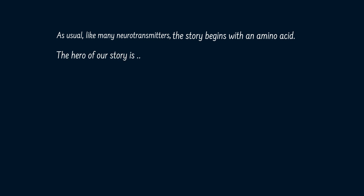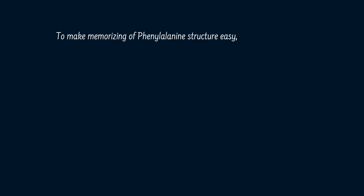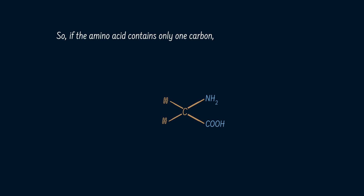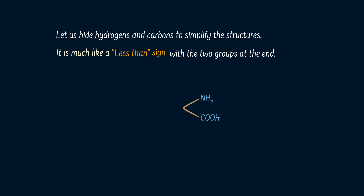The hero of our story is phenylalanine. To make memorizing a phenylalanine structure easy, let us first recognize the structure of amino acids. An amino acid has two groups attached to the same carbon: an amino group and a carboxylic group. So, if the amino acid contains only one carbon, this gives us the structure of the first amino acid, glycine. Let us hide hydrogens and carbons to simplify the structures — it is much like a less-than sign with the two groups at the end.